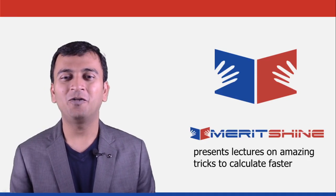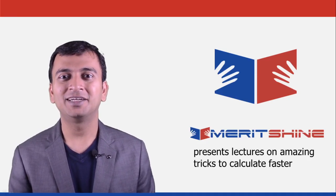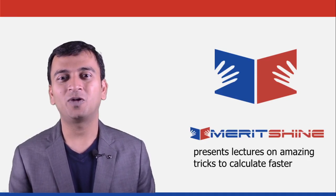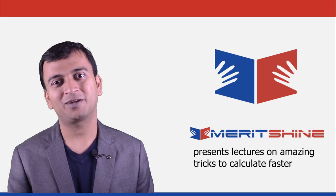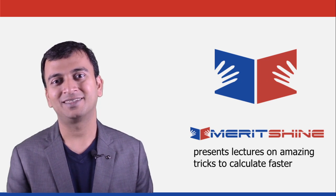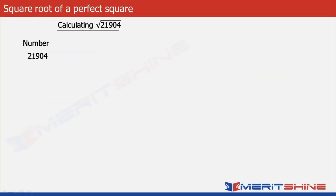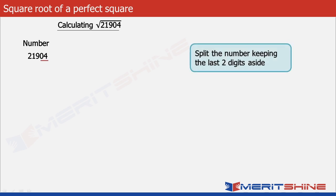I am Samir and now we will learn a trick to find the square root of a perfect square quickly. Let us begin by taking 21904 as an example. The first step would be to split the number keeping the last two digits aside.